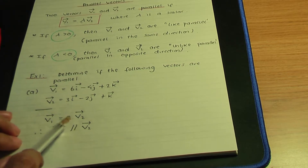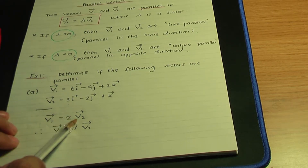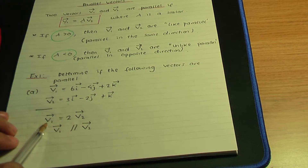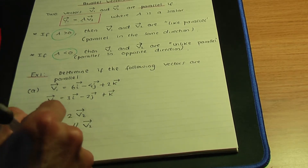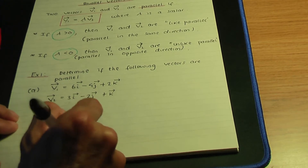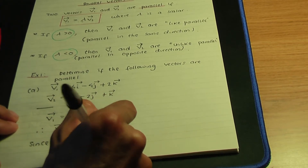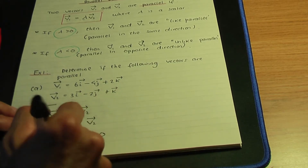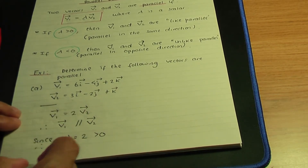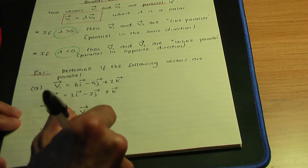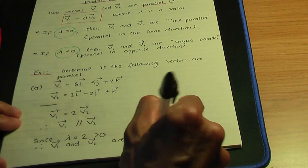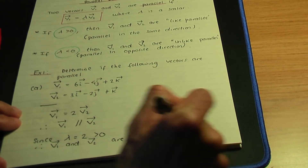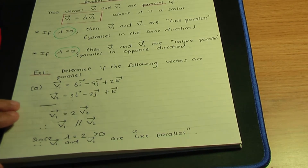Further to that, v1 is equal to plus 2 of v2, or you could also say v2 is equal to half of v1. Either way, the scalar is positive. Since lambda is 2 and 2 is greater than 0, that implies that v1 and v2 are like parallel. Like parallel means they're parallel in the same direction.